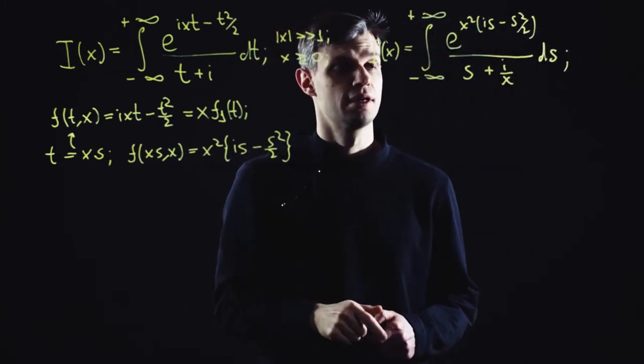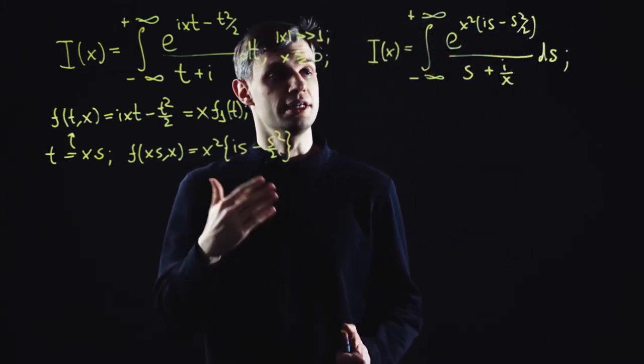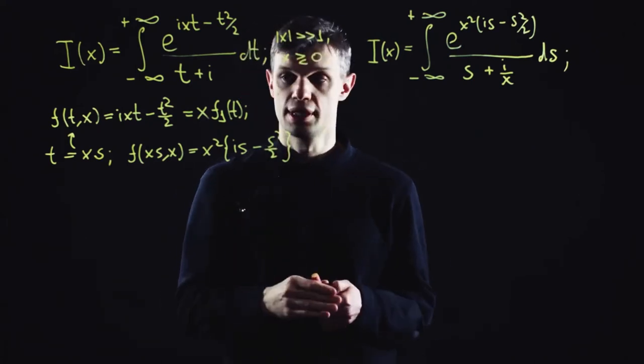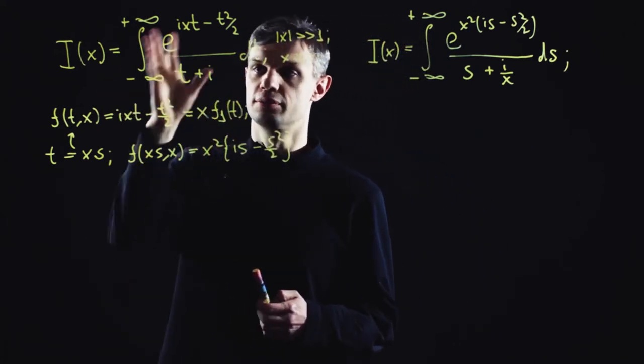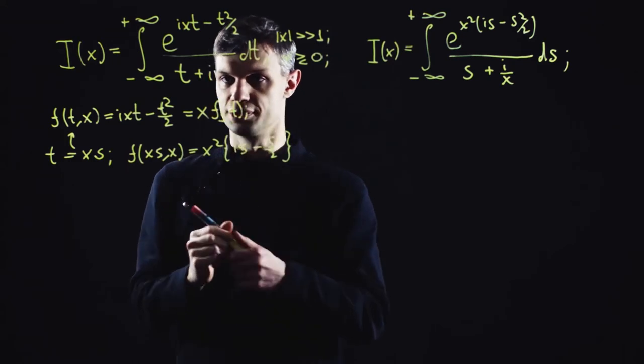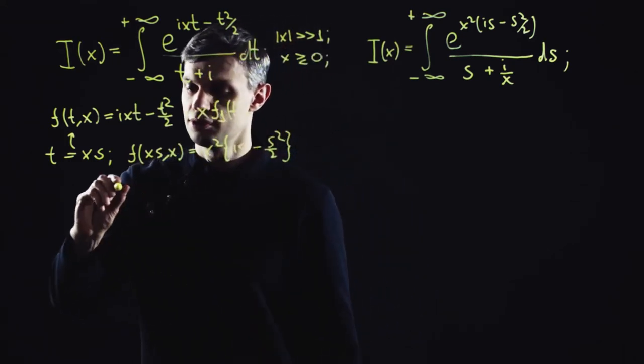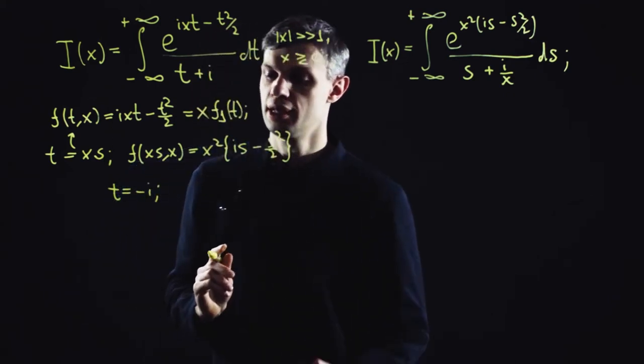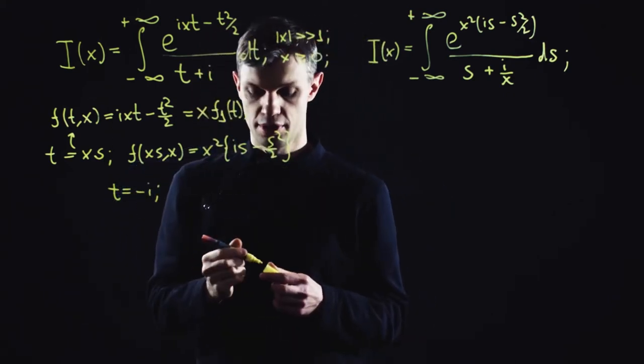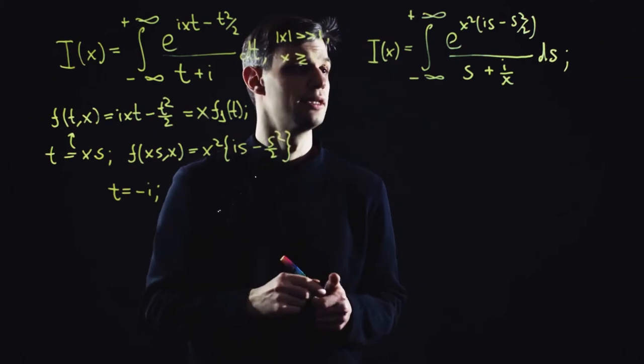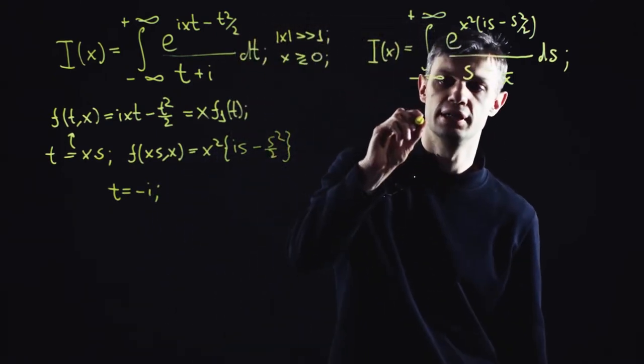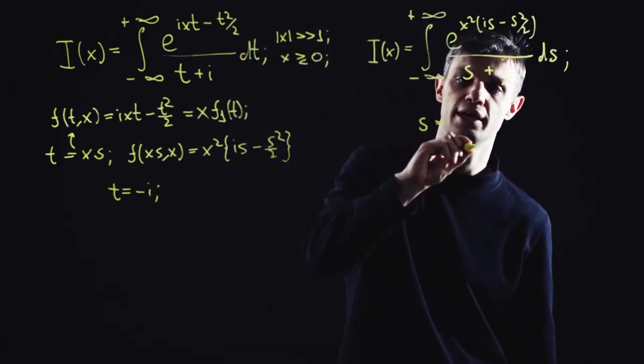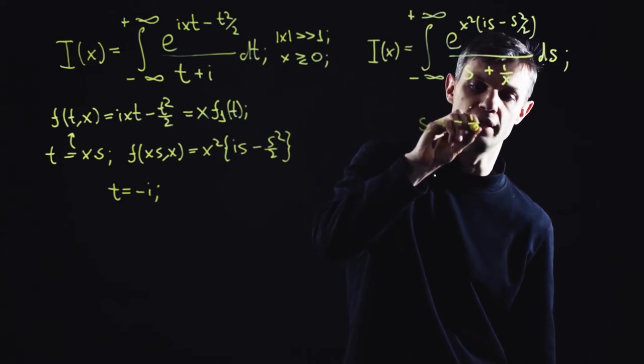But sometimes that kind of rescaling may lead to potential complications. Indeed, let's have a closer look at our integrand. The initial integrand contains a simple pole at point negative i, which is clearly independent of x. The transformed integrand contains the pole at point minus i over x, which depends on x.